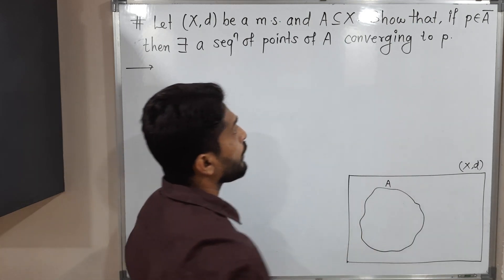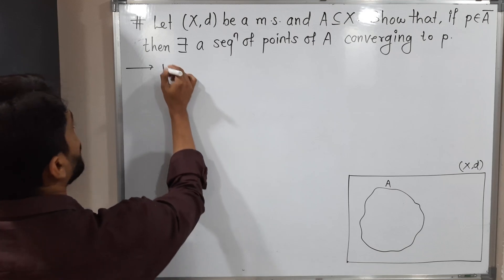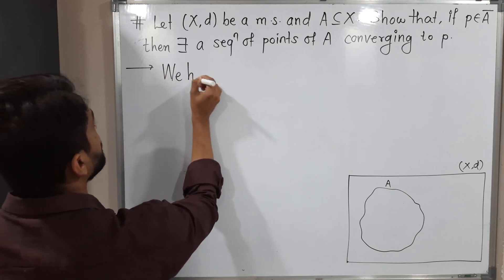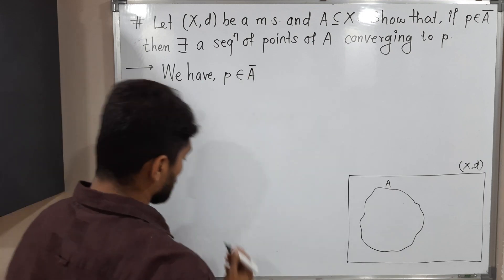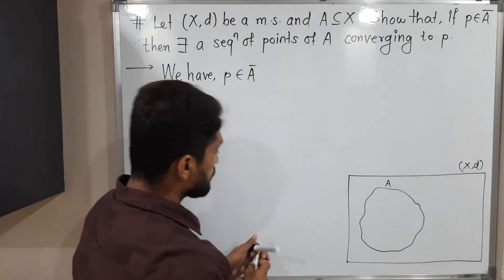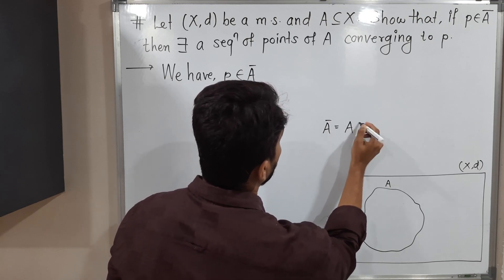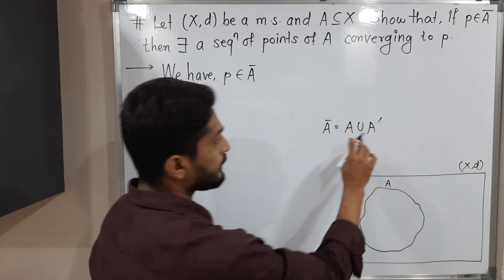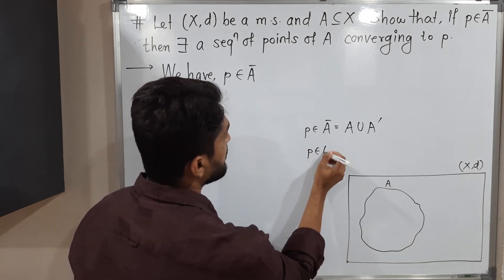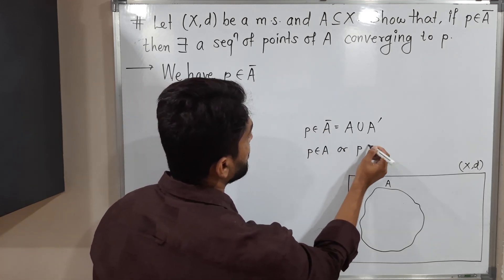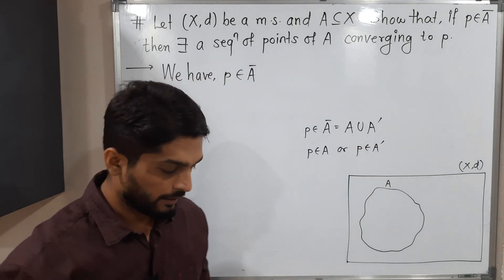We have a point P that belongs to A-bar. A-bar means A union A-dash. A-dash means the set of limit points. So if P belongs to A-bar, then P is in A or P is in A-dash — that means P is in A or P is a limit point of A.